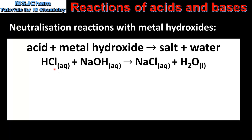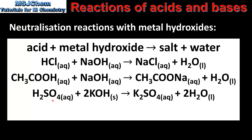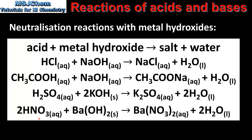In our first example we have hydrochloric acid reacting with sodium hydroxide to form sodium chloride and water. Next we have ethanoic acid reacting with sodium hydroxide to form sodium ethanoate and water. In our third reaction we have sulfuric acid reacting with potassium hydroxide to form potassium sulfate and water. And finally we have nitric acid reacting with barium hydroxide to produce barium nitrate and water. Note that in each of these reactions the products are salt and water.